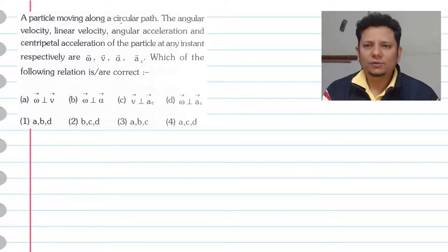Next question. The question says a particle moving along a circular path. The angular velocity, linear velocity, angular acceleration, and centripetal acceleration of the particle at any instant respectively are omega, v, alpha, and ac.